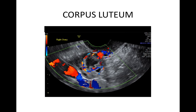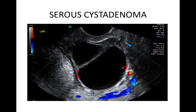A corpus luteum shows the typical peripheral ring of fire with color Doppler. A serous cystadenoma is a thin-walled cyst that contains serous fluid. It can be unilocular or multilocular — this example is multilocular — usually with fewer than 10 locules that have no solid material and contain anechoic fluid. The cyst wall is regular, there is not usually any shadowing, and the vascularity is minor.